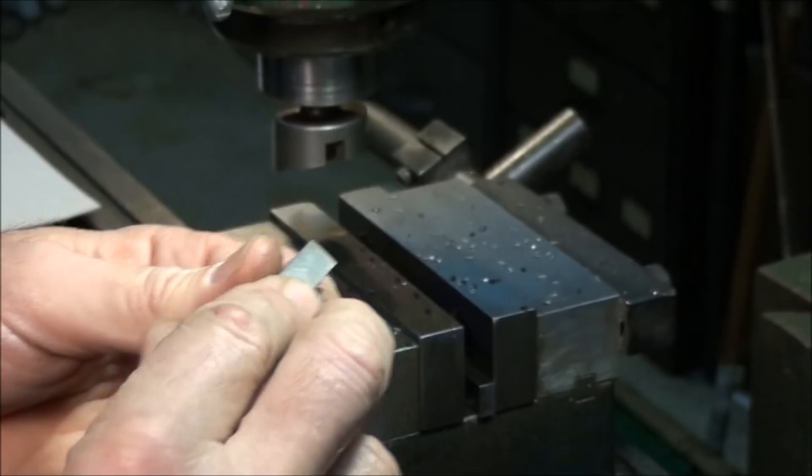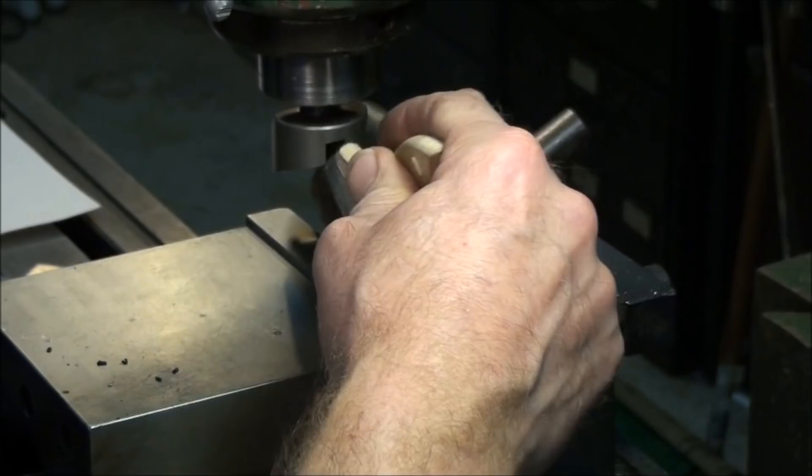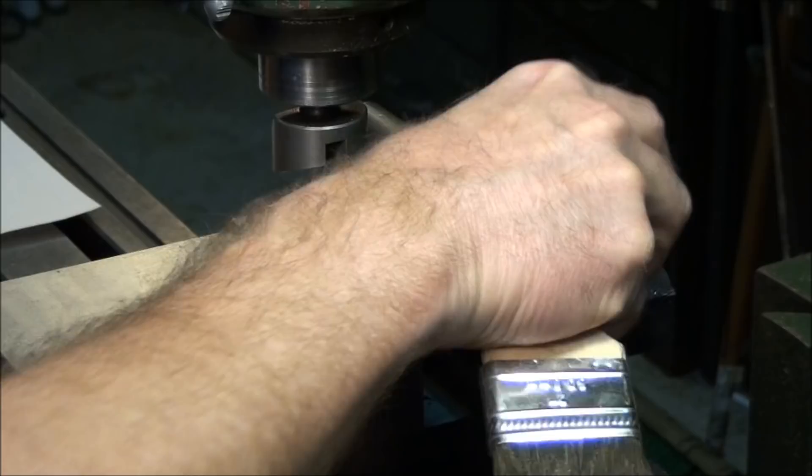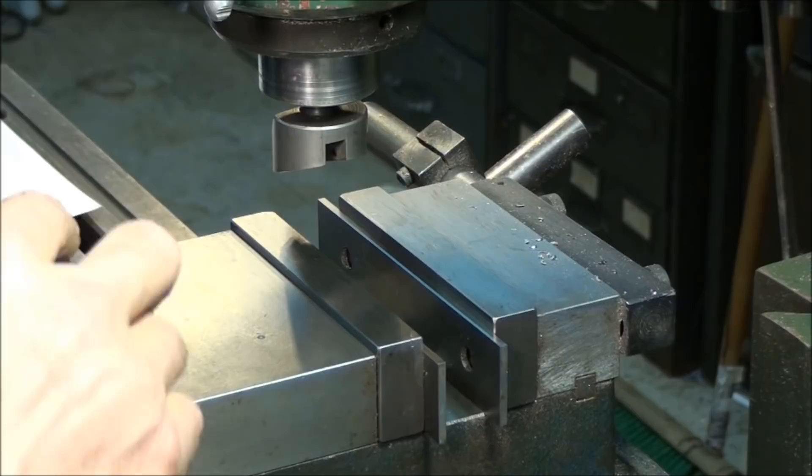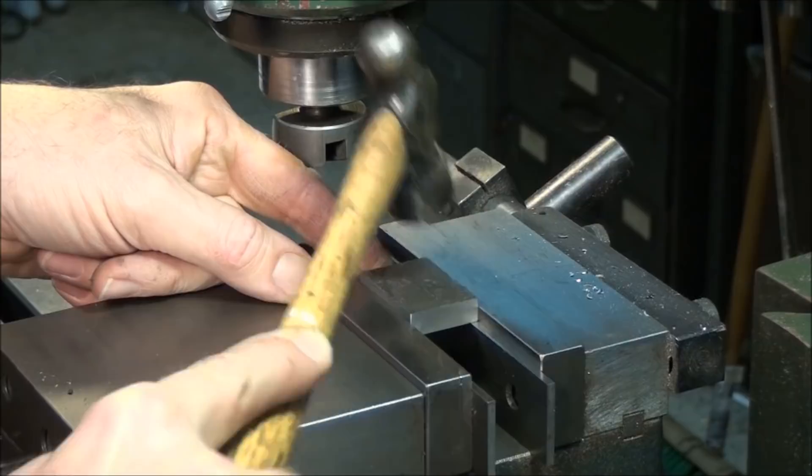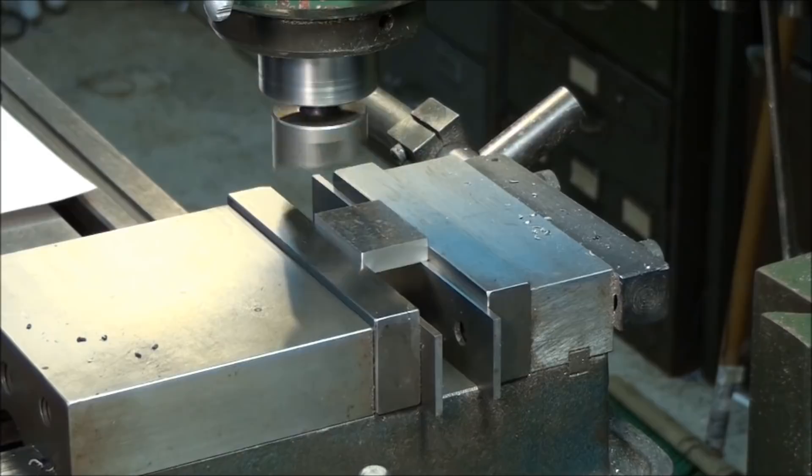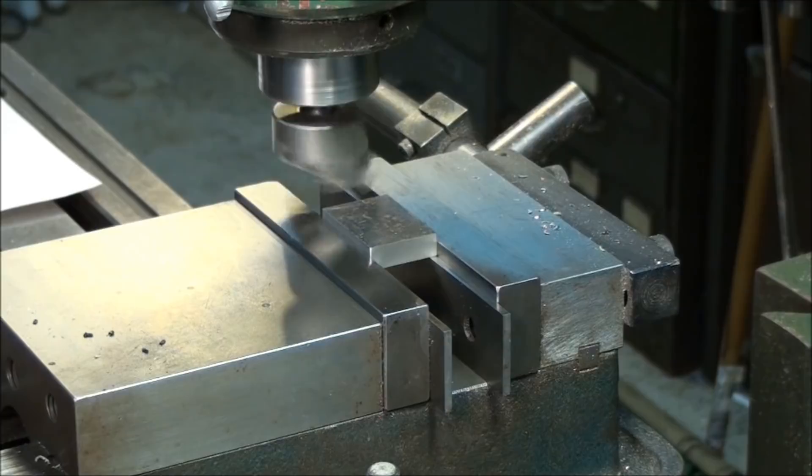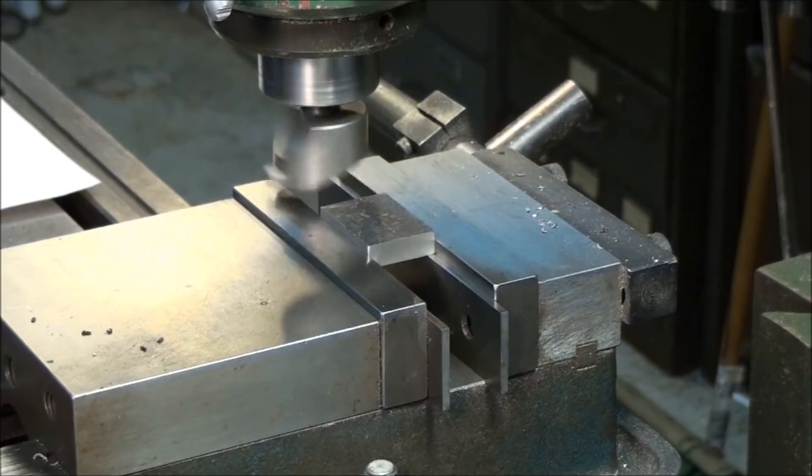So the only surface that's left, the last surface is the very top or bottom. Go back to our parallels I had in there to begin with. Set my part in the center. Tap her down with the hammer. Make sure to get underneath that hot rolled surface.